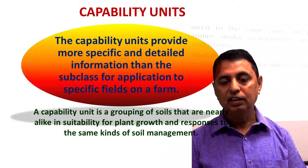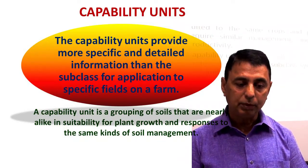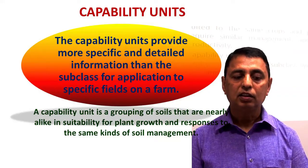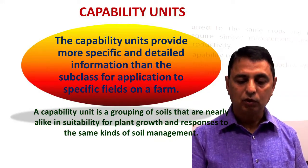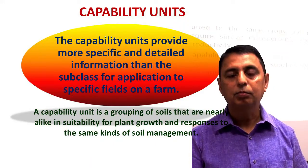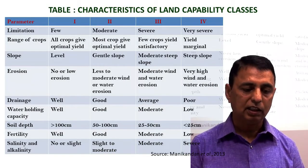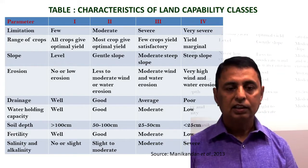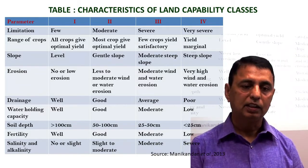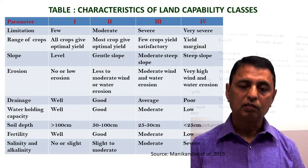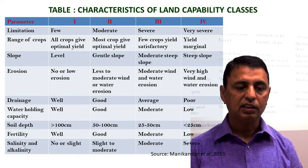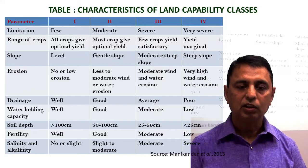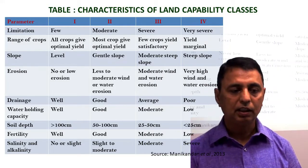Land capability units are generally designated by adding an Arabic numeral to the subclass symbol — for example, 2E4 and 3E4. By this notation we can represent land capability units clearly, as shown in the Manikandhan et al. reference. In the characteristics table, land capability classifications 1 to 4 are compared. Class 1 has few limitations, class 2 moderate, class 3 severe, and class 4 very severe limitations.